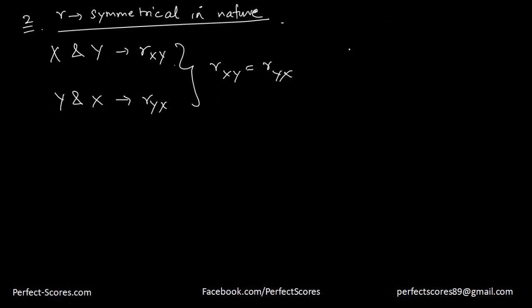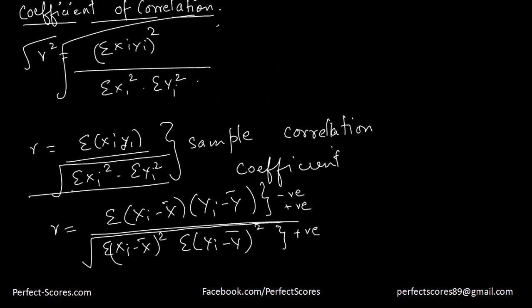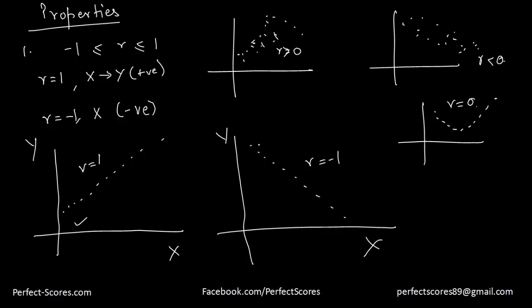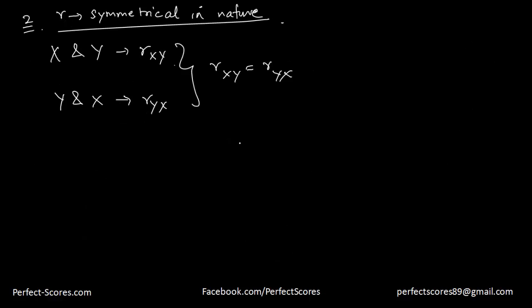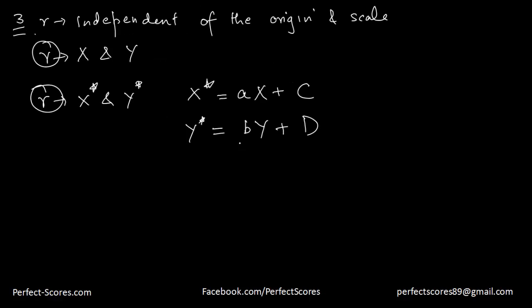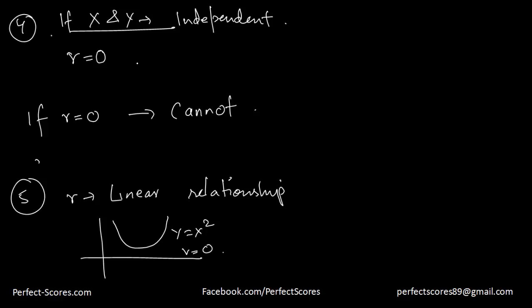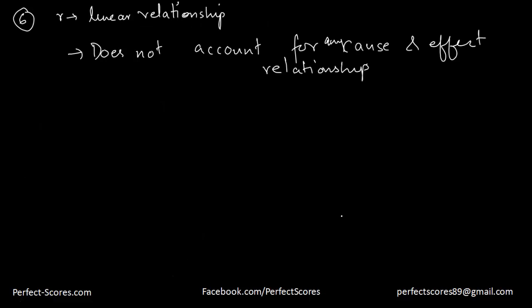So that is about this video. The value of r is derived from the coefficient of determination — which is r squared — and once we take the square root we get the coefficient of correlation. From this value of r we can determine the extent of the linear relationship between two variables. The properties we discussed are: r lies between 1 and negative 1; r is symmetrical in nature; r is independent of origin and scale; r equal to zero does not always mean x and y are independent; and r only talks about linear relationships and does not account for any cause-and-effect relationship. Thank you very much for watching.